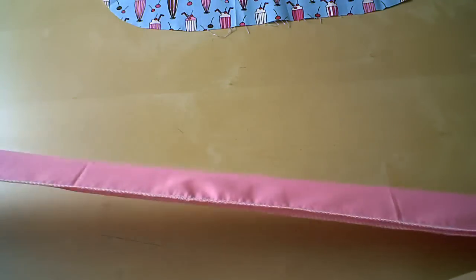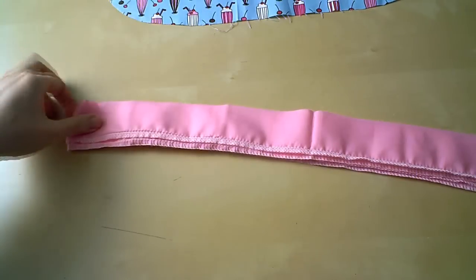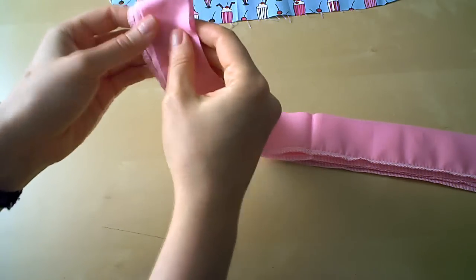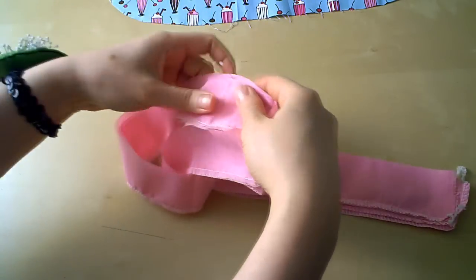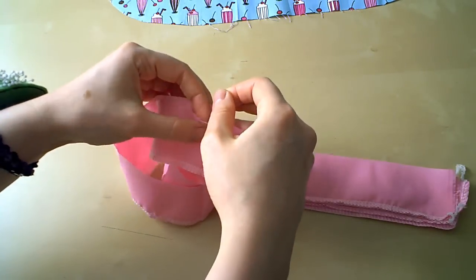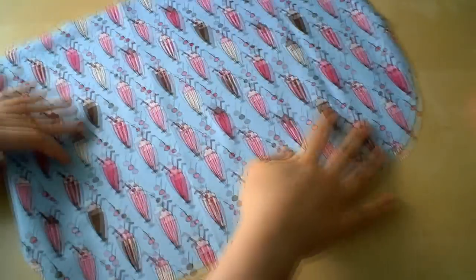Take the trim fabric and fold it in half. Then fold it in half again. Now, mark all the spots where there are folds with a pin. This is called quarter marking. Basically you've just divided up the trim fabric into four equal quarters.